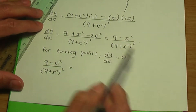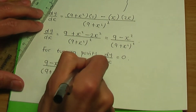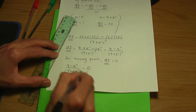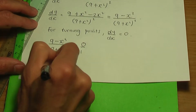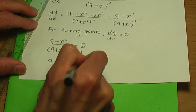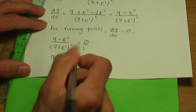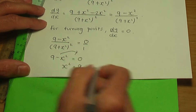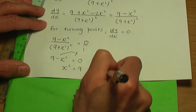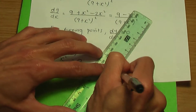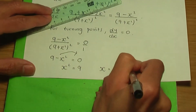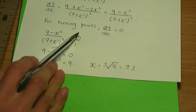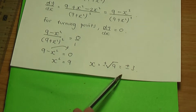So we have dy over dx equals 9 minus x squared divided by (9 plus x squared) squared, and we set that equal to 0. Cross-multiplying gives 9 minus x squared equals 0, so x squared equals 9, and therefore x equals plus or minus the square root of 9, which is plus or minus 3. We have two x coordinates: plus 3 and minus 3.